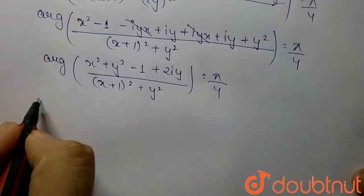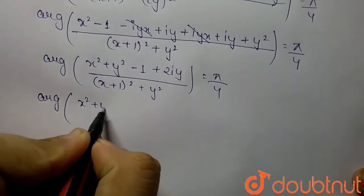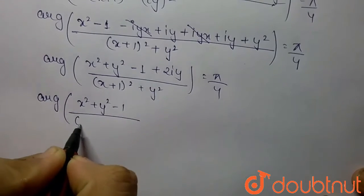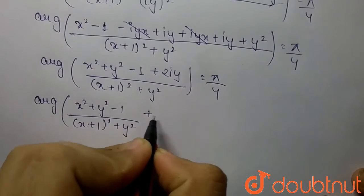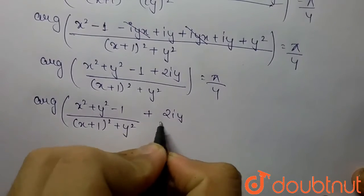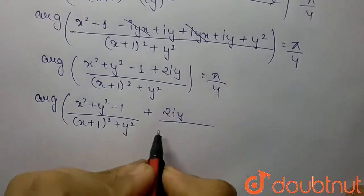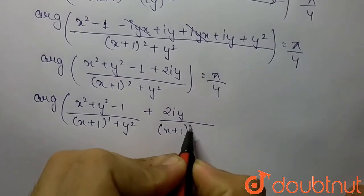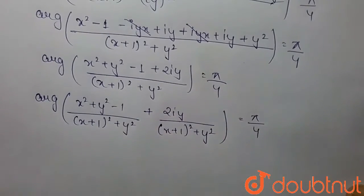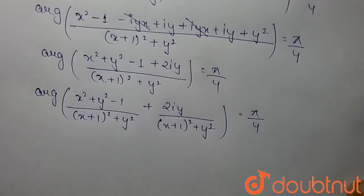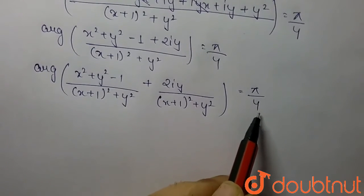Separating real and imaginary terms, we get: argument of [(x² + y² - 1)/((x+1)² + y²) + 2iy/((x+1)² + y²)] equals π/4. This equals an angle, so it is in polar form.